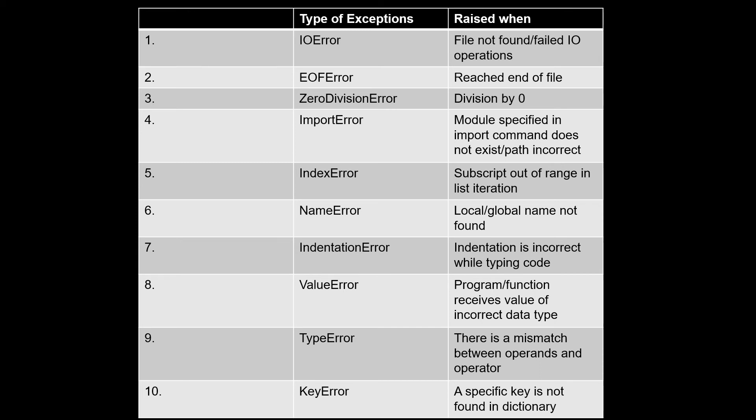Then we have EOFError (End of File Error), commonly used in try-except when scanning through a file line by line in a text file or reading objects in a binary file. ZeroDivisionError we have already seen — catch it whenever there is a chance of division by zero. ImportError occurs whenever you try to import a module that is not present in your existing path or not installed in the compiler.